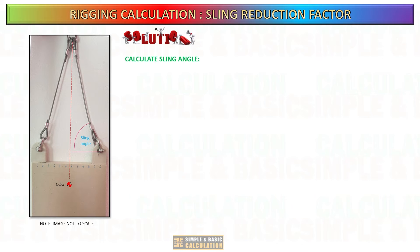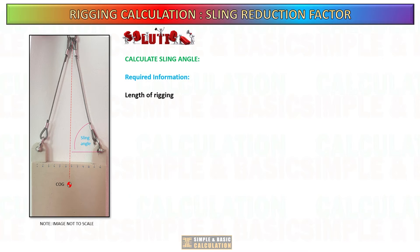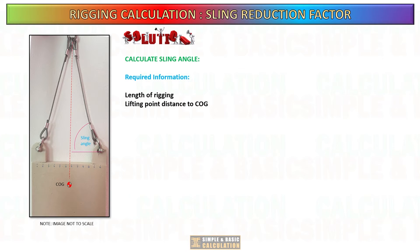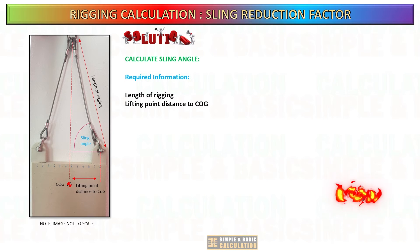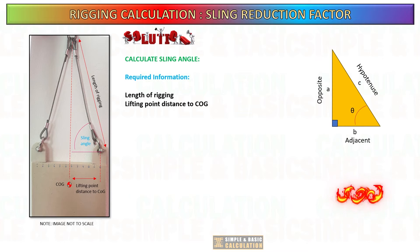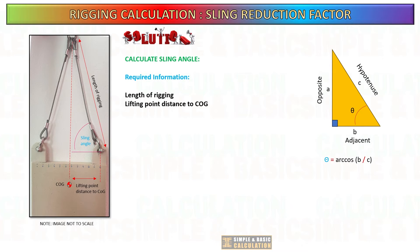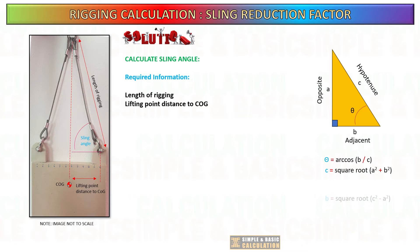What about using two bridle legs to lift the load? The safe working load (SWL) of the sling decreases as a result of the sling angle. However, how can we determine the angle? In order to determine the angle of the sling, it is necessary to identify both the rigging length and the distance between the lifting point and the load center of gravity.